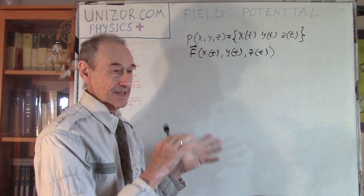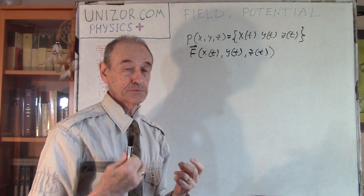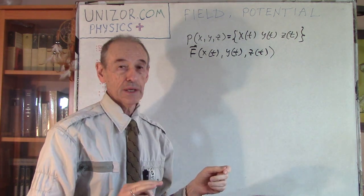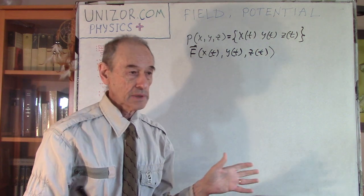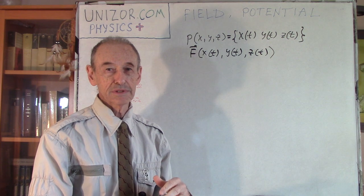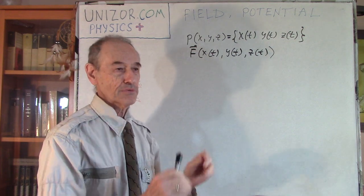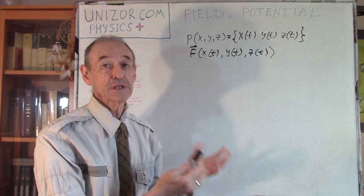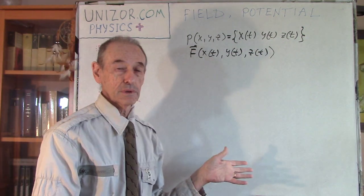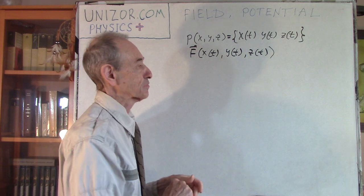The field is an area. The force is very often called field intensity - so there is a field, which is an area, and field intensity, which is the force. Some textbooks identify field with field intensity and use them interchangeably. I prefer field to be an area, as the word field implies, and field intensity to be the force.